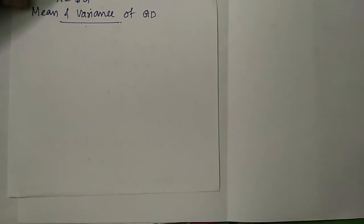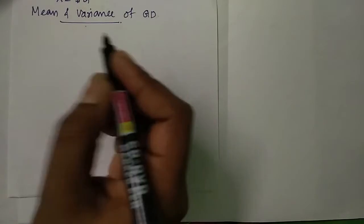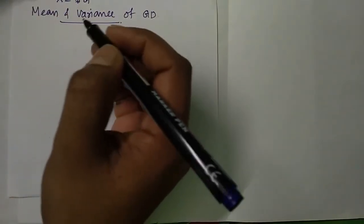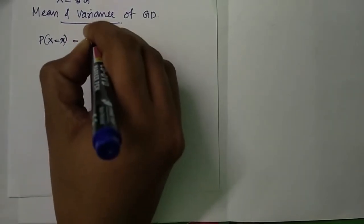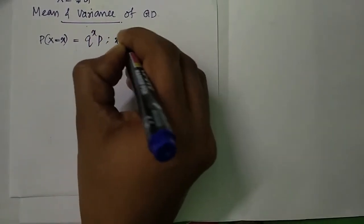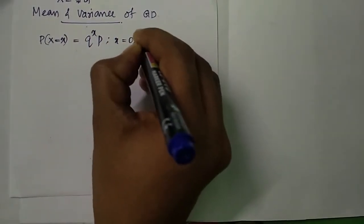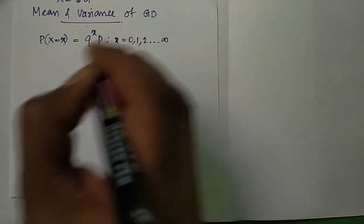Hello friends. In this video, we will derive the mean and variance of geometric distribution. For a geometric distribution, we know that the probability mass function P(x) is q raised to x times p, where x ranges from 0 to infinity.